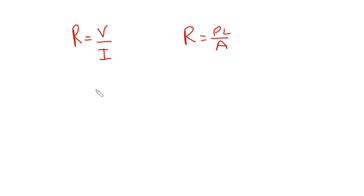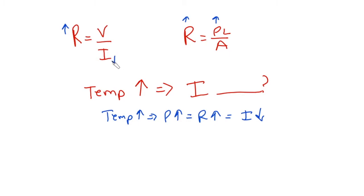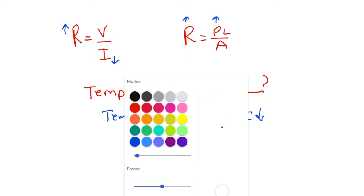So now we can ask ourselves a couple different questions. As temp goes up, what happens to current? Well, if temp goes up, therefore resistivity goes up. Therefore, R goes up. Therefore, I goes down. So as temp goes up, it raises this, which raises this. And as this goes up, it makes this go down. These are going to be relationships that you are going to have to see.